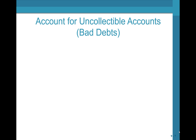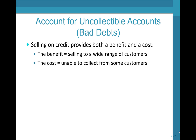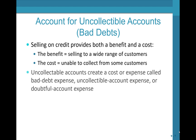Accounting for bad debts. Selling on credit provides both a benefit and a cost. The benefit is selling to a wider range of customers, including those who may not have had cash with them at the time. But the cost is that some customers may be unable to pay, or you will be unable to collect from them in the future. Uncollectable accounts create a cost or expense, which we typically call bad debt expense.